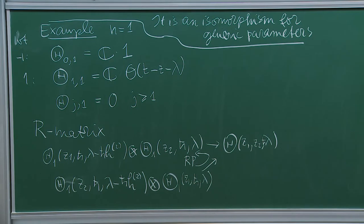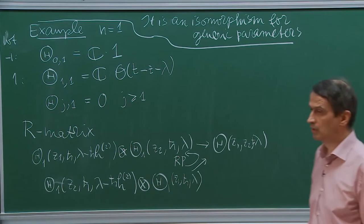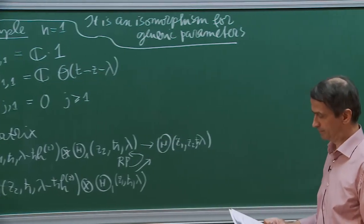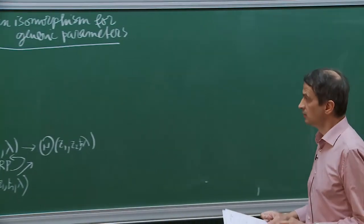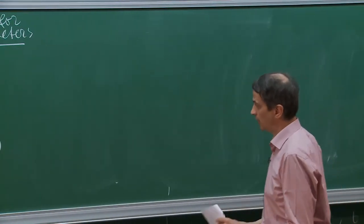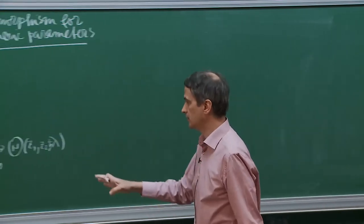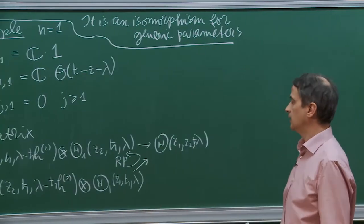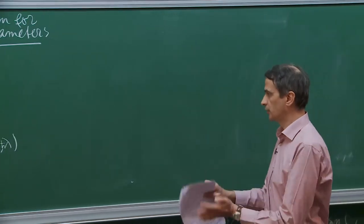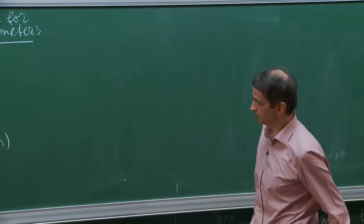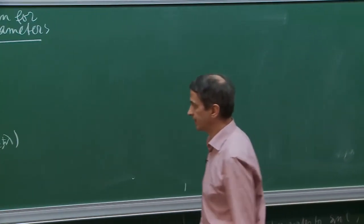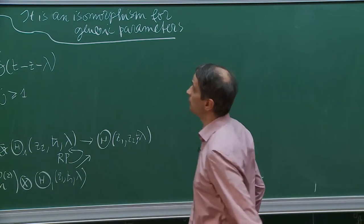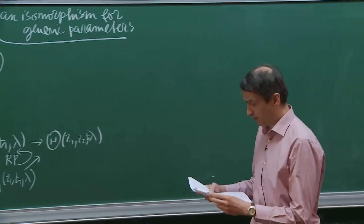You're saying that the stable envelope is the multiplication and the R-matrix is the combination of two orderings — yes. Maulik and Okounkov define stable envelopes for various chambers; these correspond to two different chambers. The relation between the two orderings is given by the R-matrix.